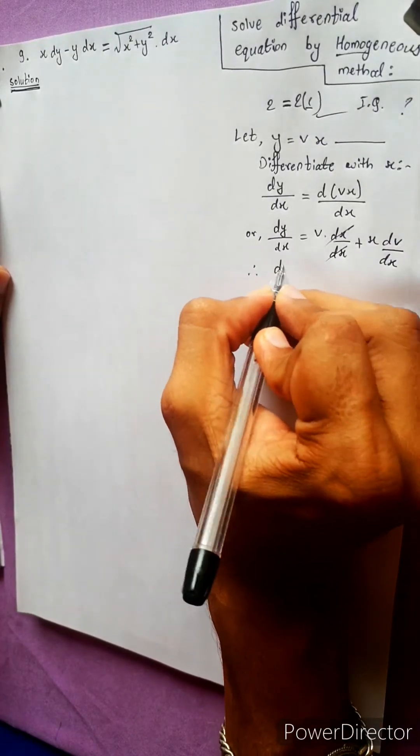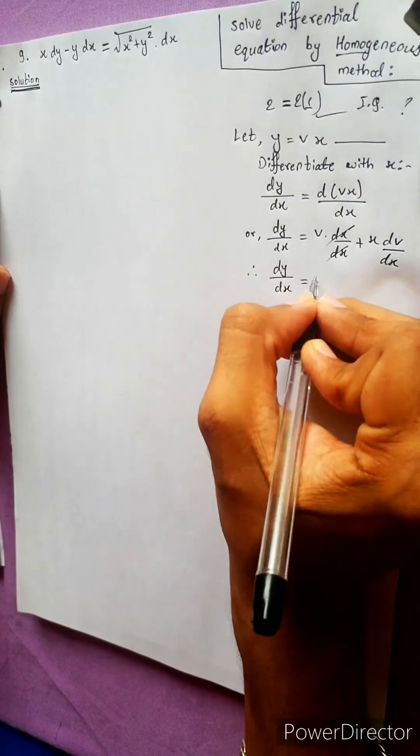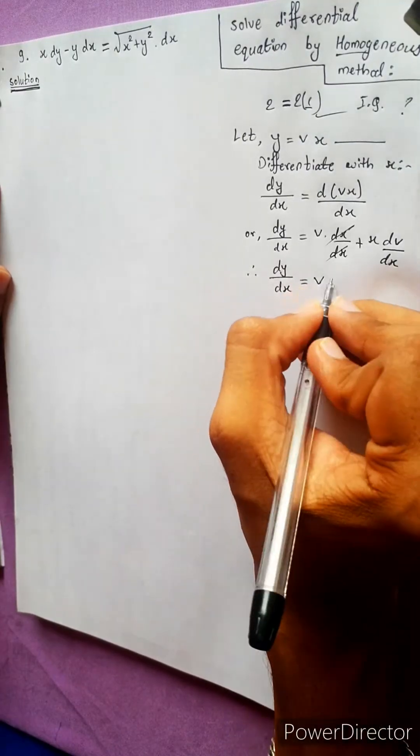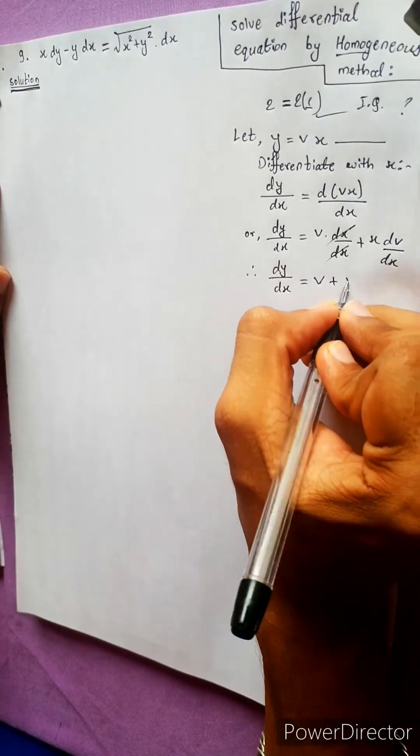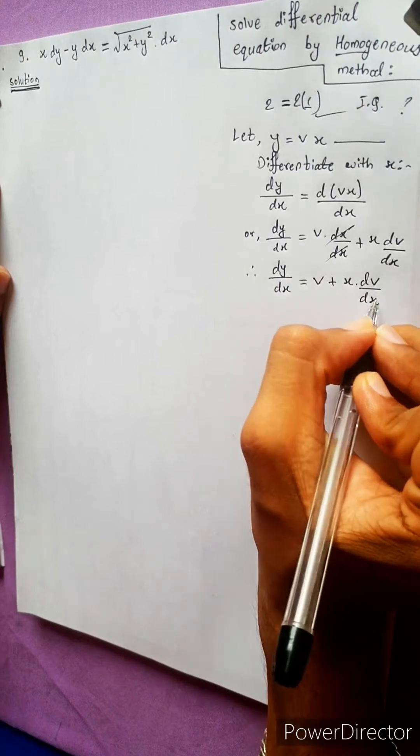Therefore, dy by dx equals to v plus x times dv by dx.